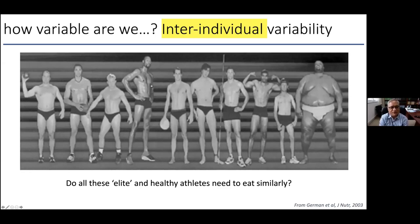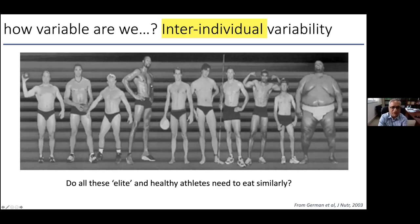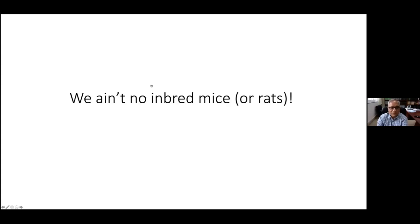Yet we quite blindly accept that if a book or Google tells us how much to eat, that's fine. If you go to your doctor and ask for an antibiotic or painkiller, you'll probably be prescribed a fixed dose regardless of your size — it's very rare in medicine to give drugs based on body size, except for more toxic drugs like cancer medications. So we are not inbred mice. There is great variability between us.